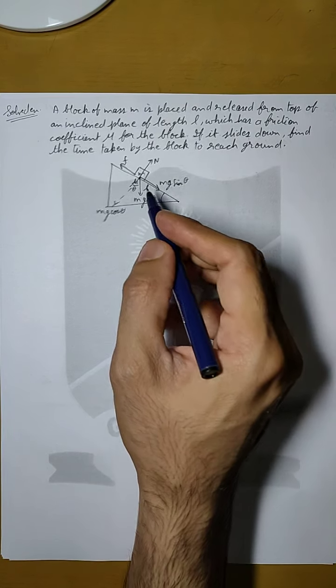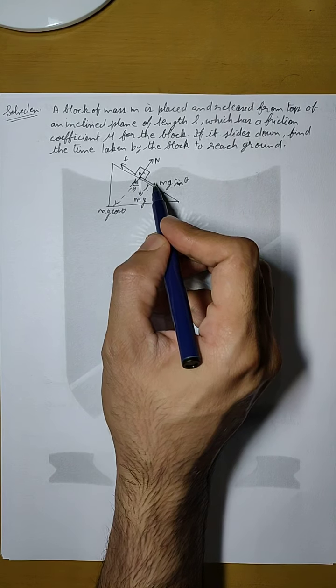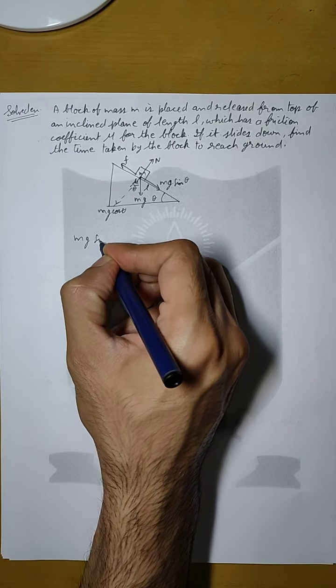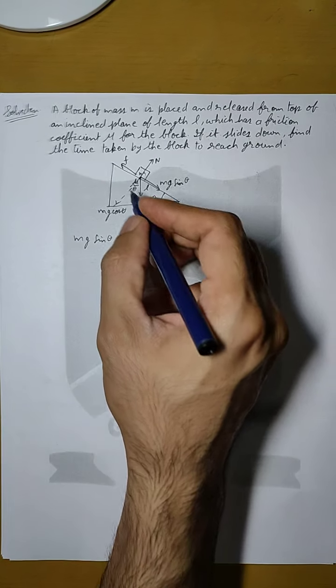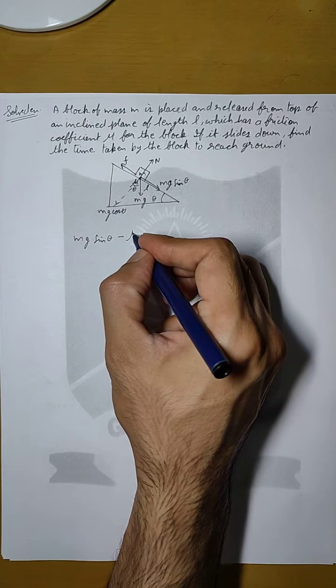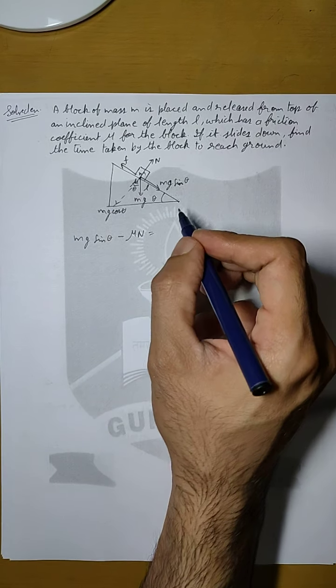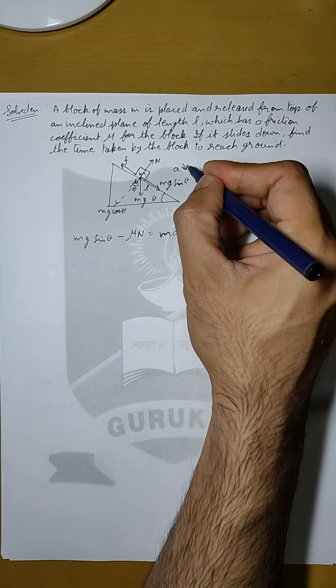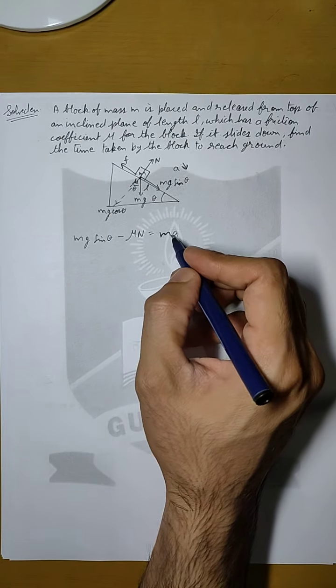So if we find the equations then for this Mg sin theta minus F which is mu N will be equal to MA, the acceleration with which the block is moving. So this will be the equation.